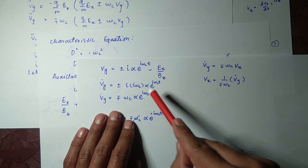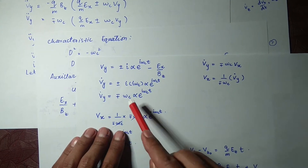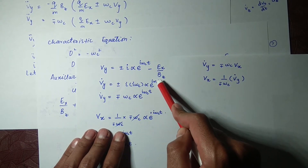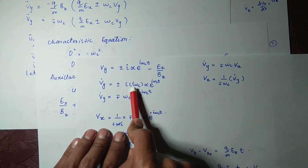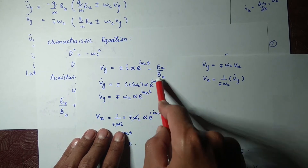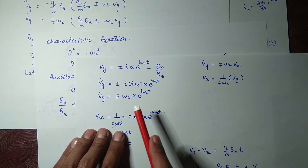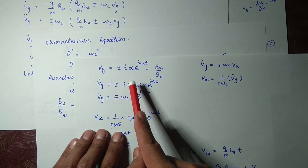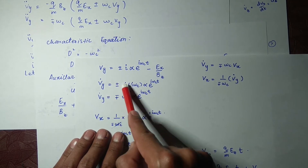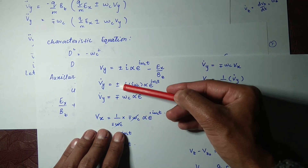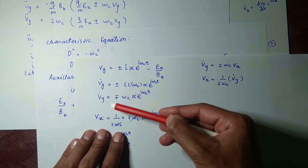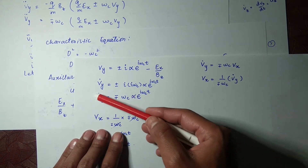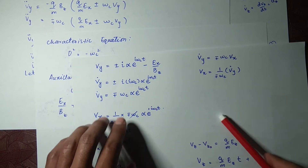When you take the time derivative of this equation, e^(iωct) will come multiplied here. The power comes down when we take the derivative, giving iota times iota, which is iota squared, and iota squared equals minus one. This minus one inverts the signs, so where it was plus/minus it becomes minus/plus, giving us the value of v_y dot.